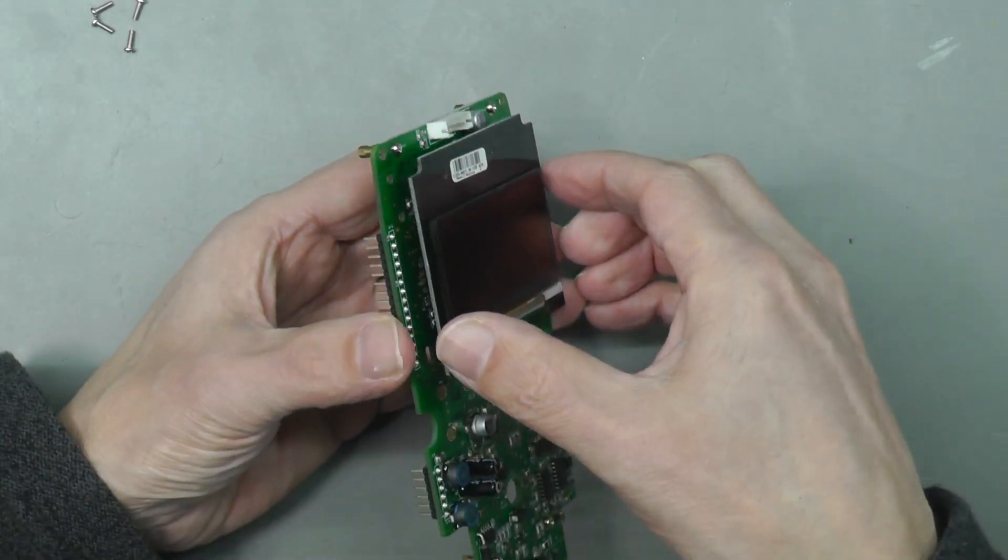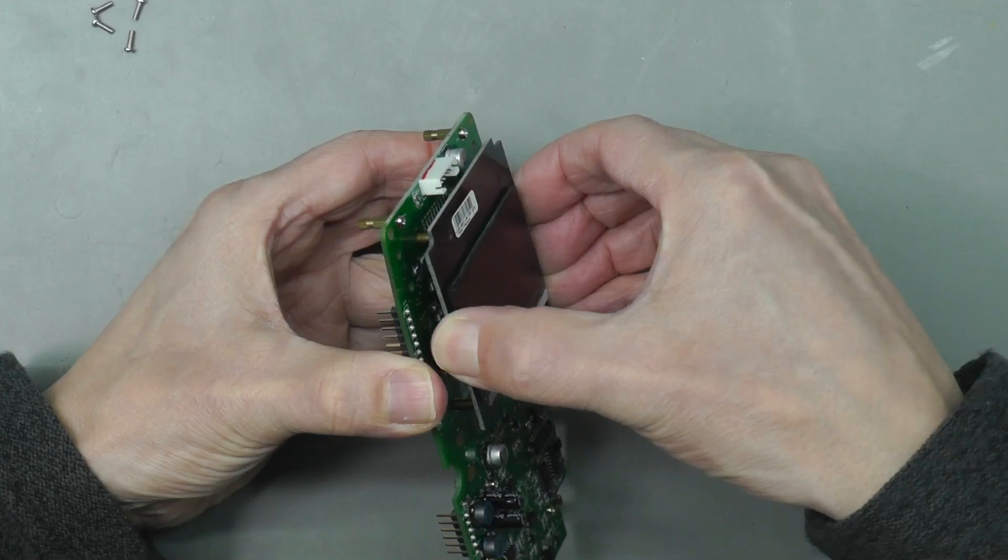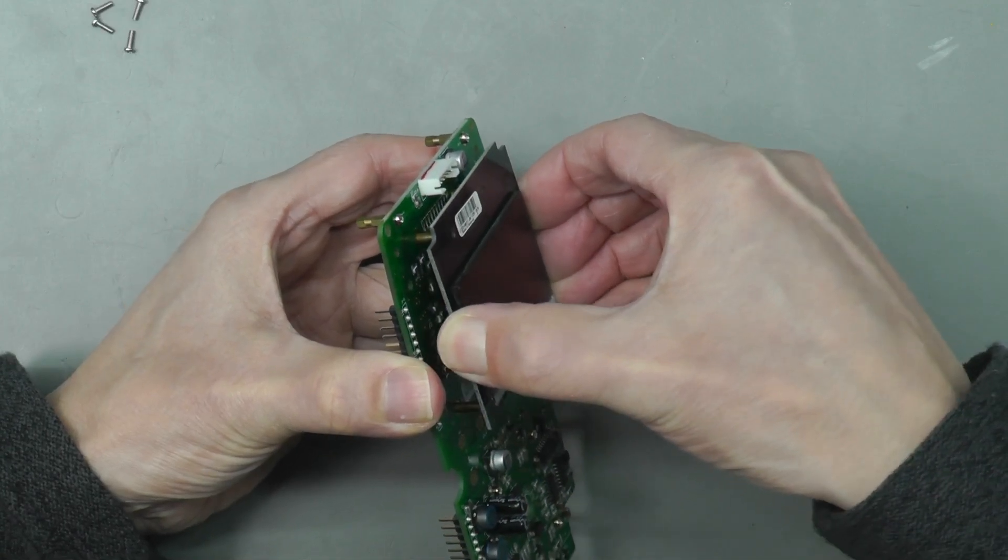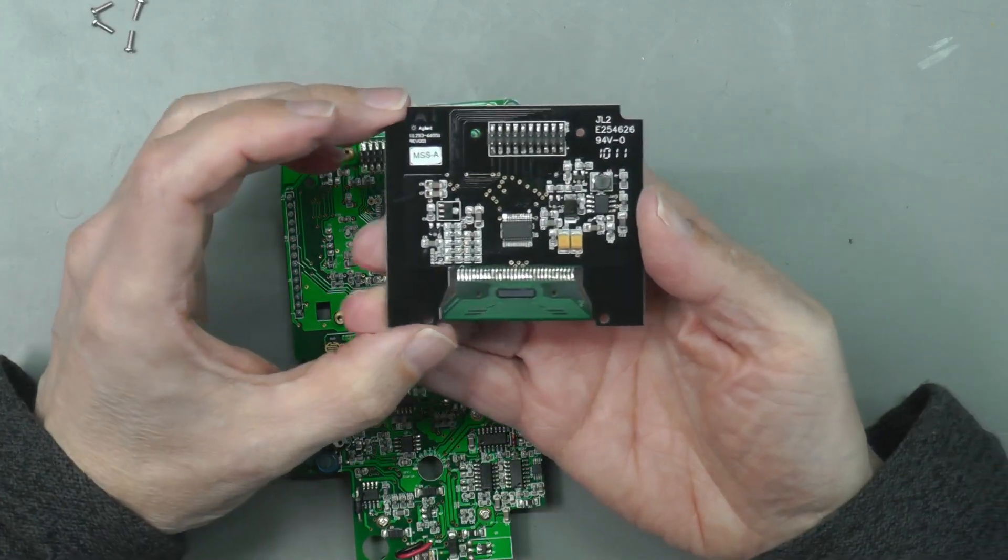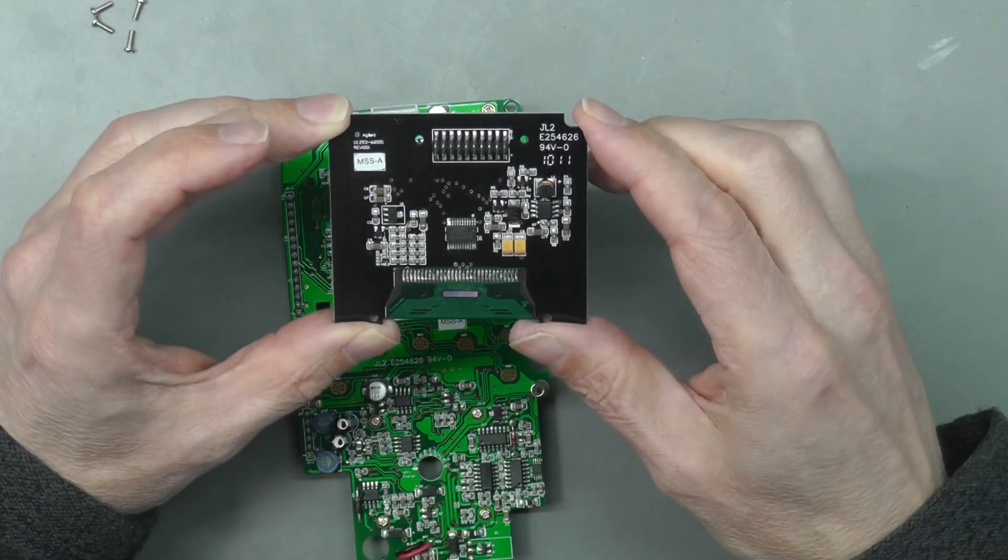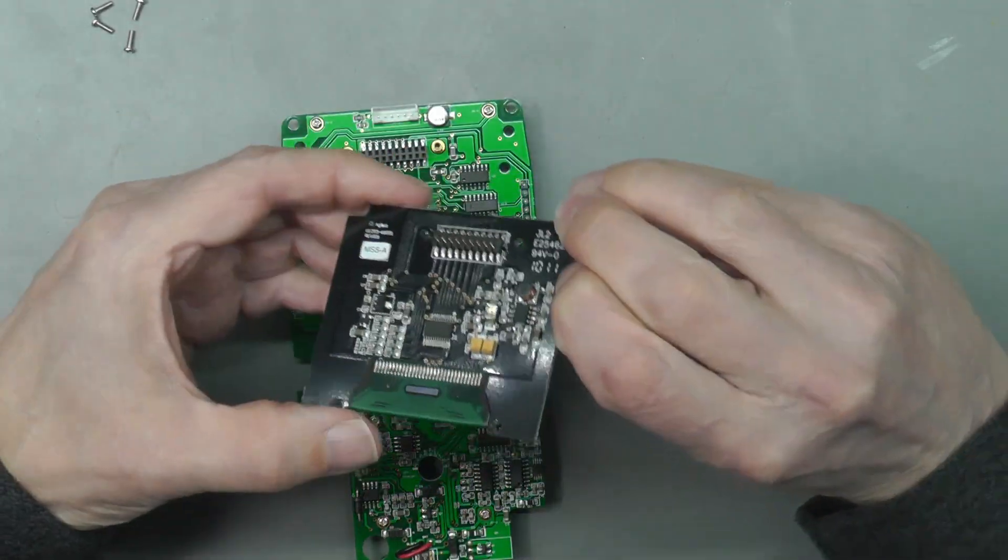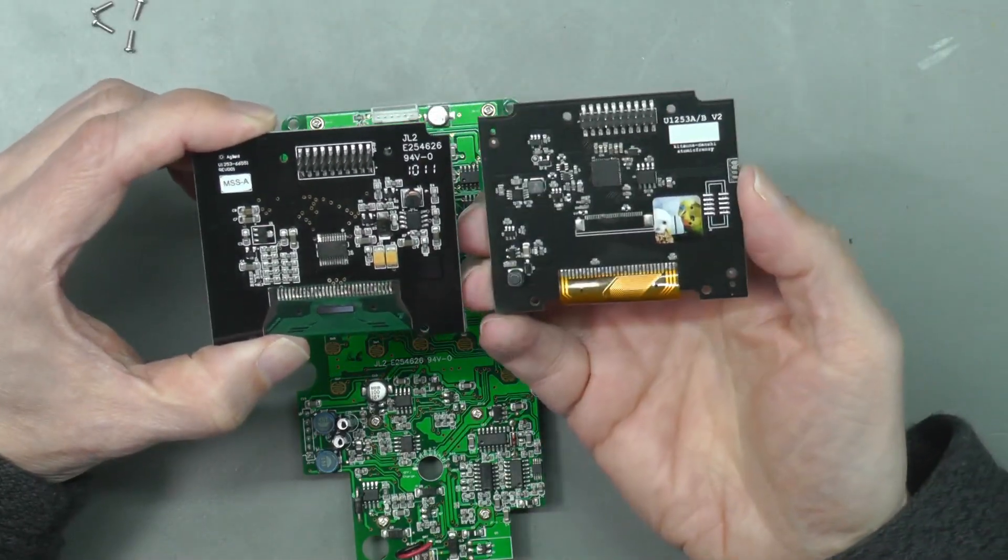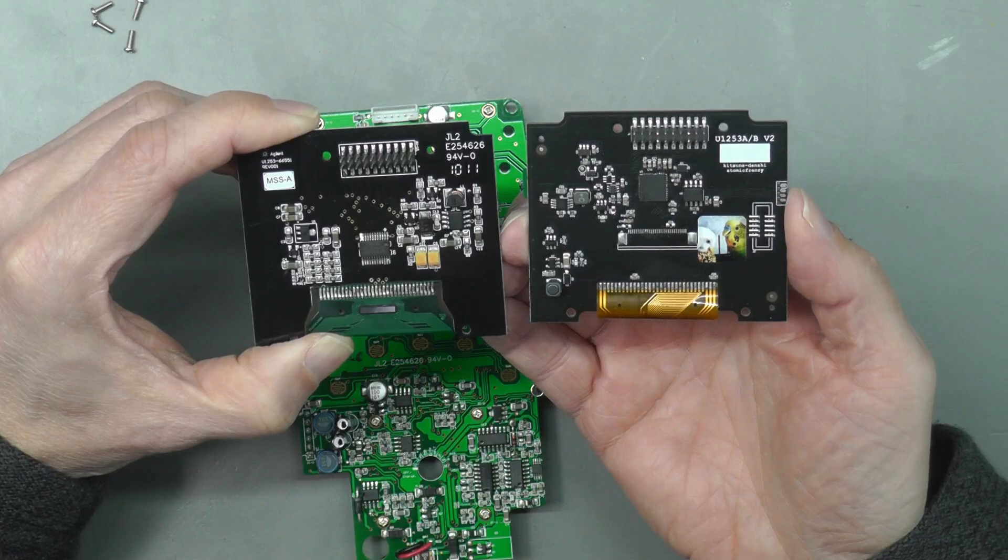That's the four screws out, so let's see if it just unplugs. Yep, and there we go. You can see the actual control IC there and the bonded connection for the actual display itself. If we compare that with this new one, it's got a completely different set of hardware there for controlling the display, but obviously the protocol for the main board onto the display is identical. This new board is going to pick all that up.